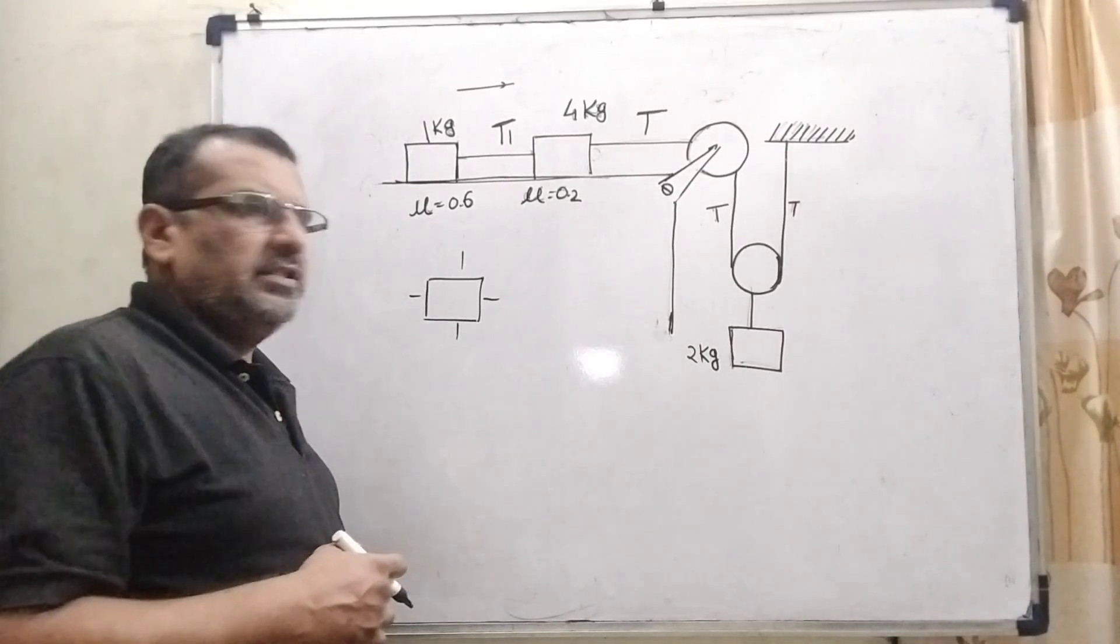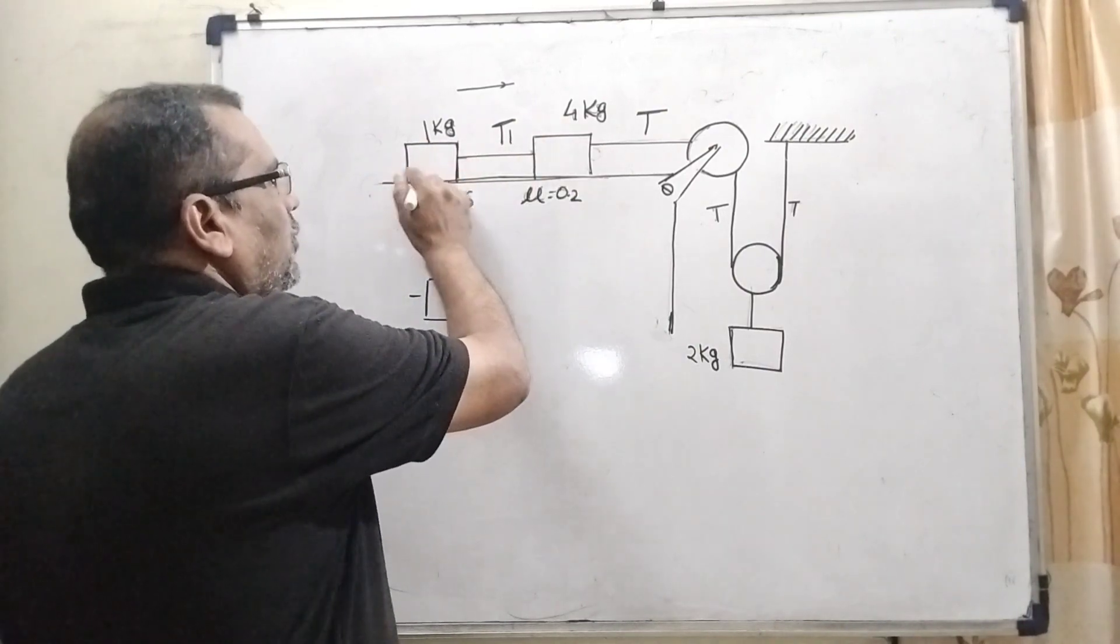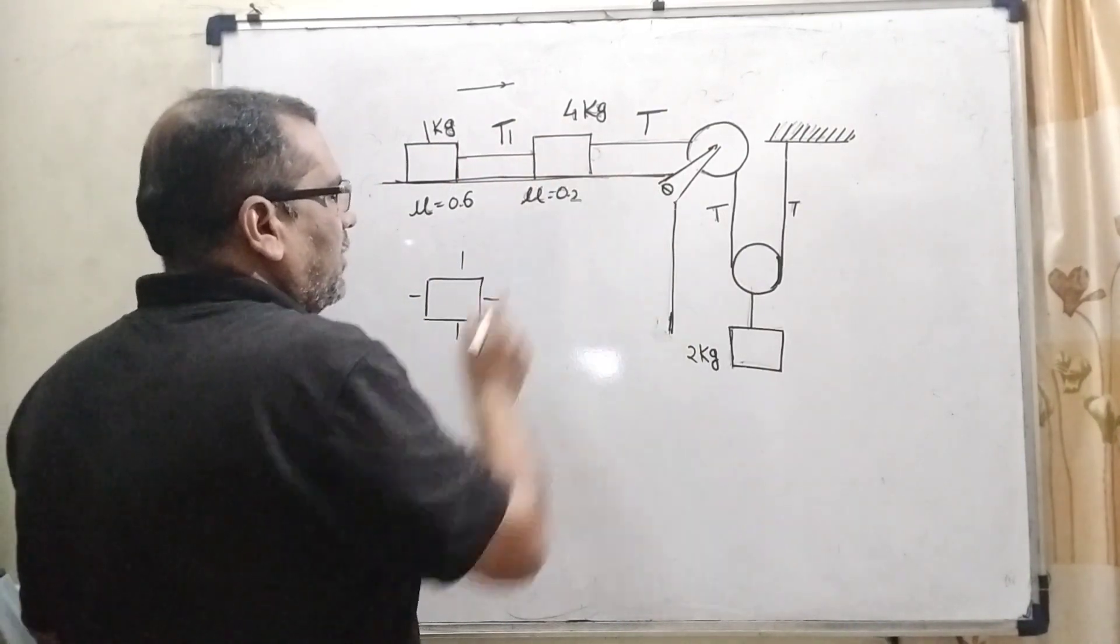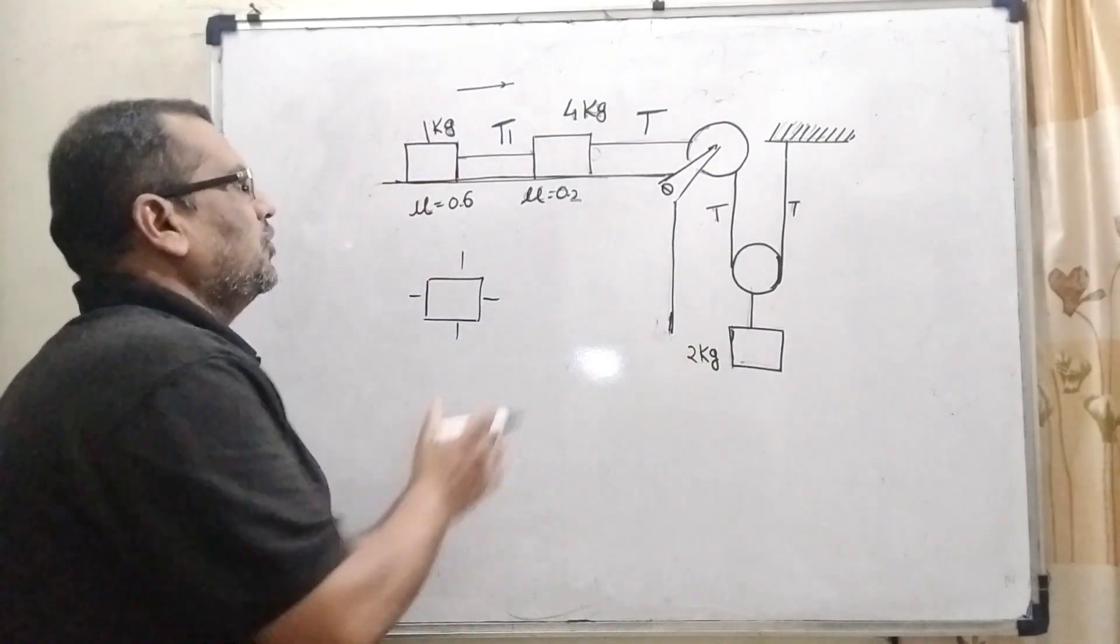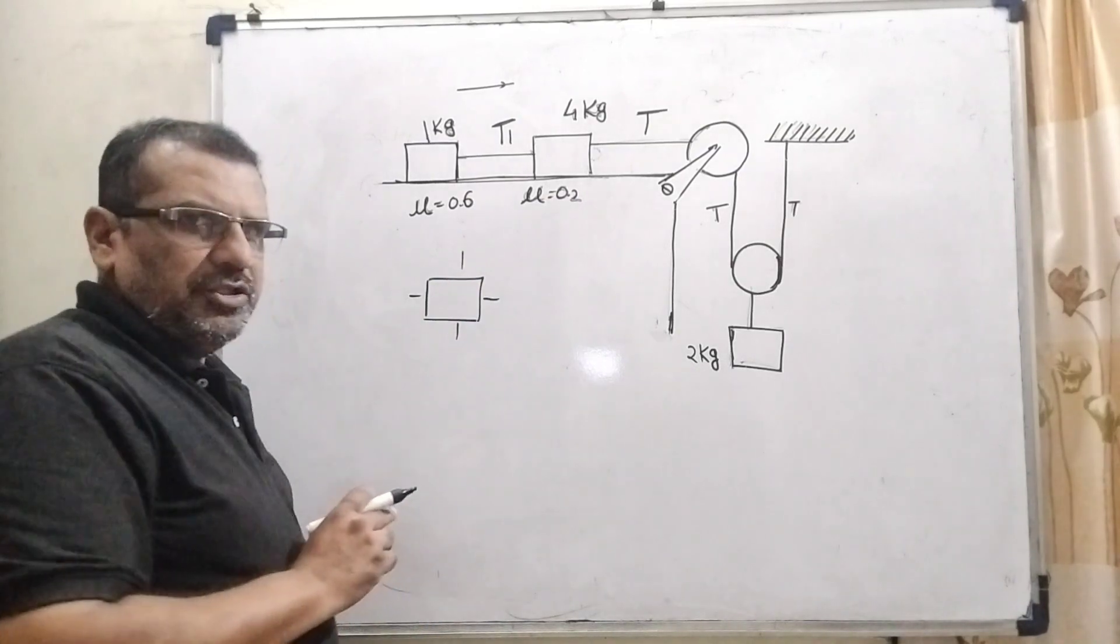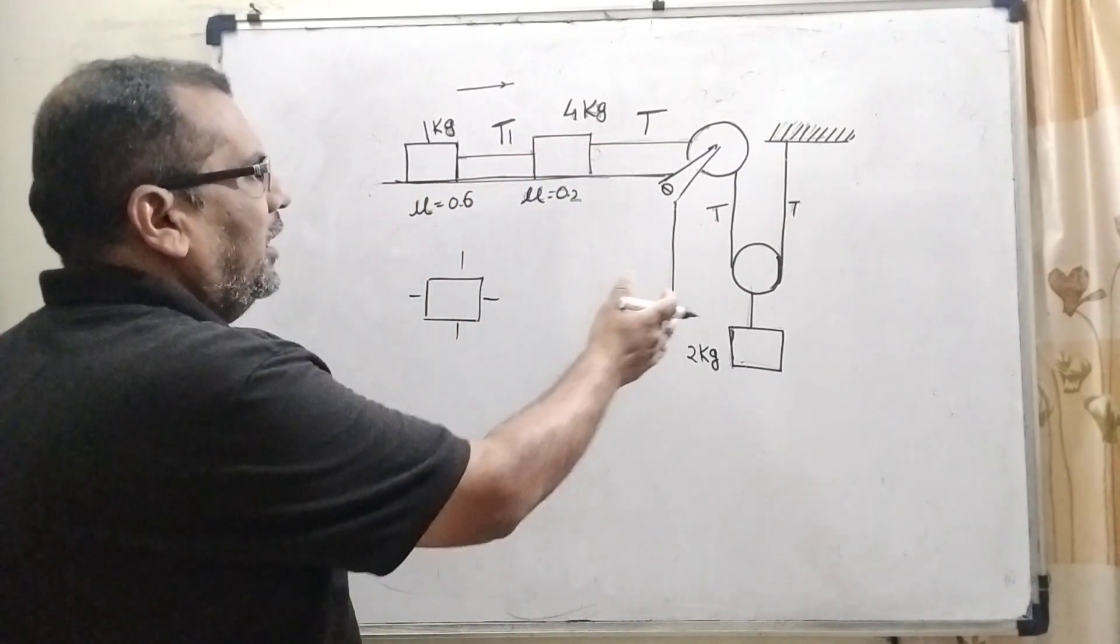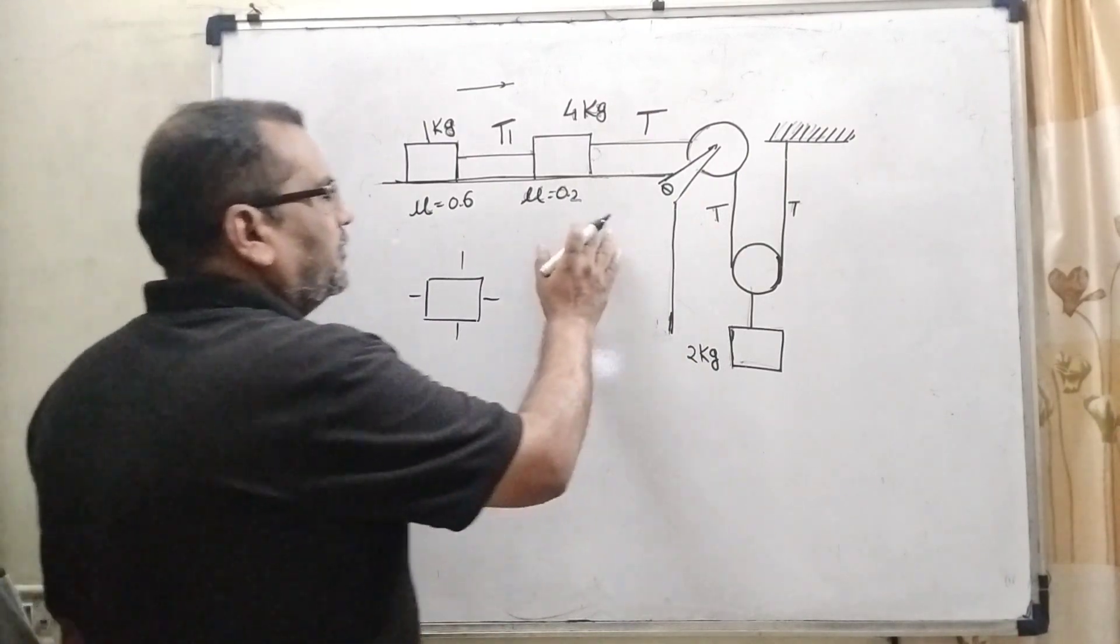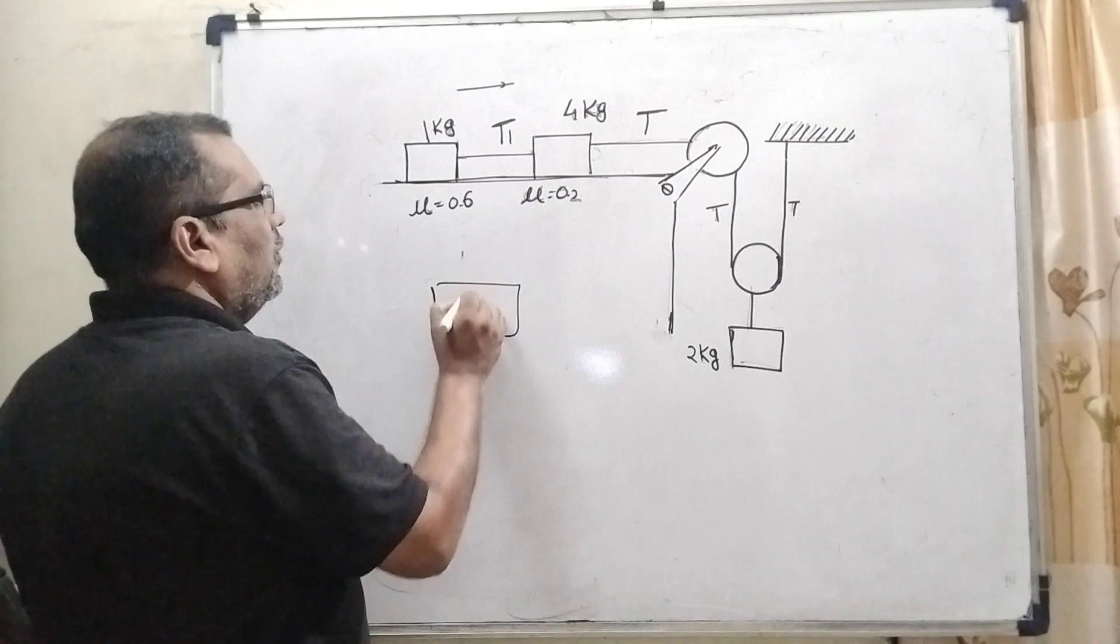Clearly, we can see that this diagram 2 blocks that is 1 kilogram and 4 kilogram put on the this table and 2 kilogram block which is hanging. So therefore, clearly that is an equilibrium position that is a static condition. So let us first, we have to find out one by one T, T1 and this is here the values for the first block that is for 1 kilogram.